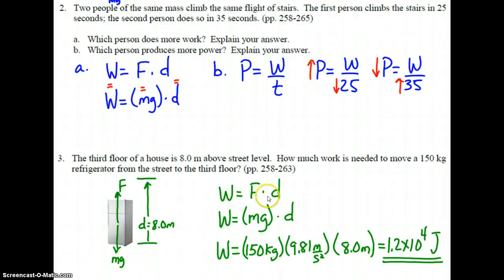W equals F times D. The force is the same as the weight because the force applied is overcoming the weight. The mass is 150 kilograms. Little g, 9.81 meters per second squared. And the vertical distance, eight meters. Multiply, you should get to two digits, 1.2 times 10 to the fourth joules.